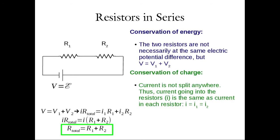For series resistors, the total resistance is just the sum of the individual resistances. Series capacitors had a different rule — one over the total capacitance equaled the sum of one over the individual capacitances. A helpful tip: the rules that apply for series capacitors apply for parallel resistors, and the rules for parallel capacitors apply for series resistors — just substitute R's for C's. If you can remember one, you can get the other by swapping them.